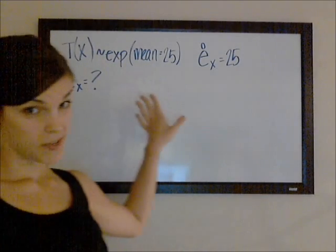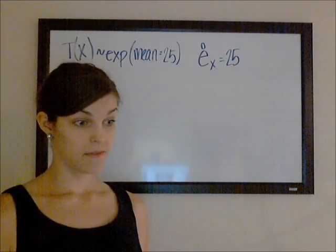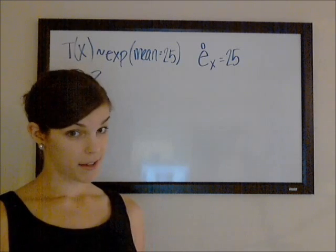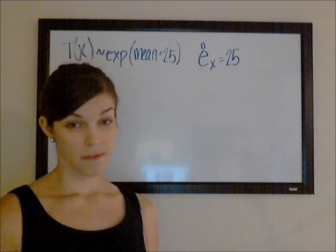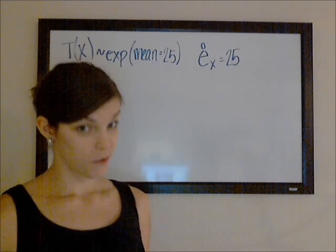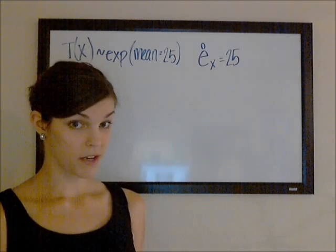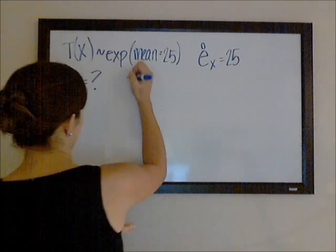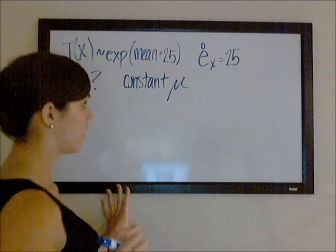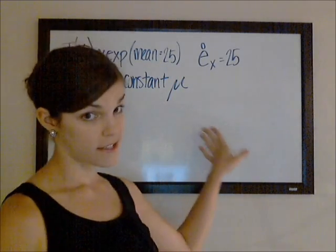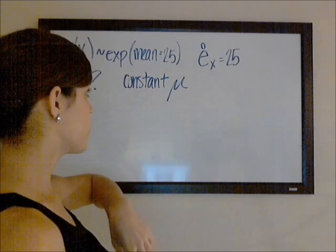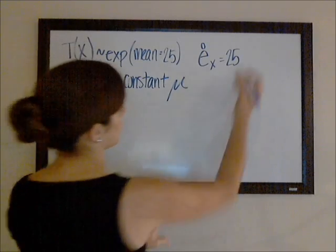This also means if you always expect him to live the same number of years, no matter where you're at, that means that your force of mortality is always the same. So the rate of failure, or here, the rate at which you die, is always the same. In other words, we have a constant μ, or a constant force of mortality. And we know that if we have a constant μ, our continuous expected future lifetime for X equals 1 over μ.